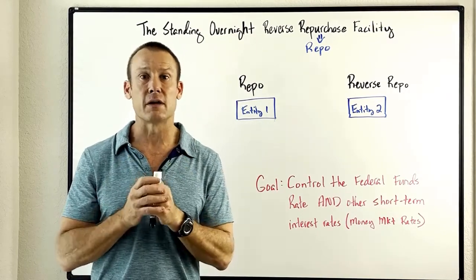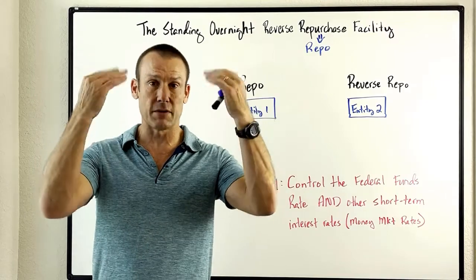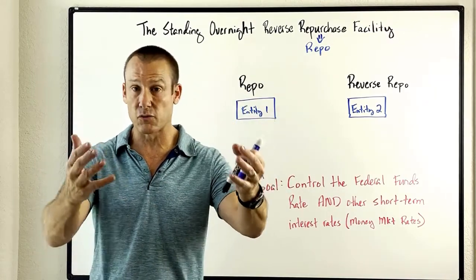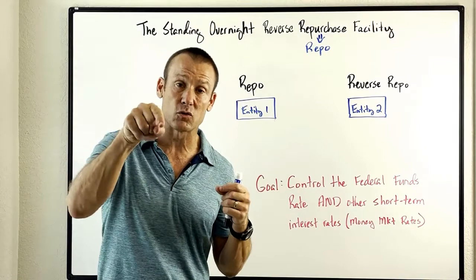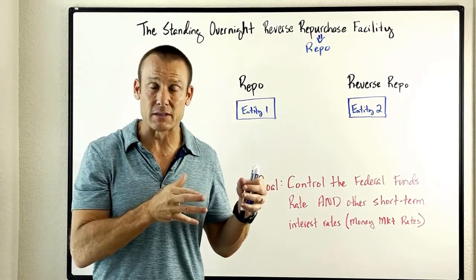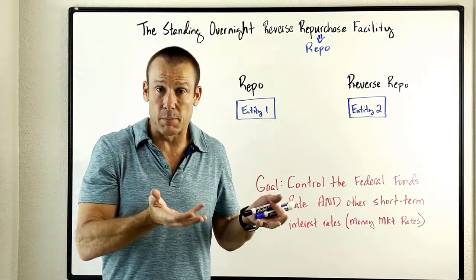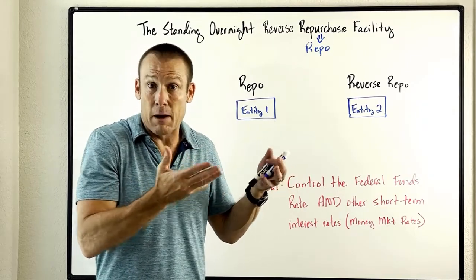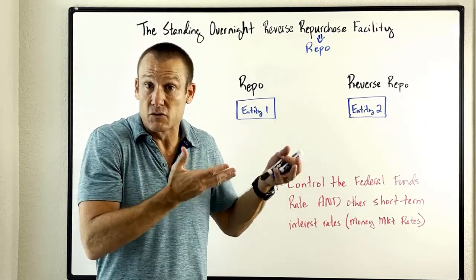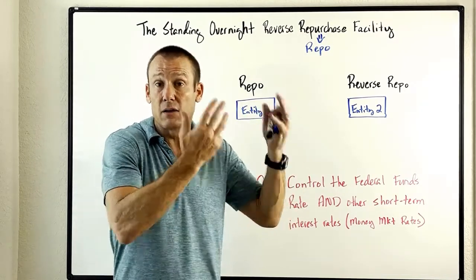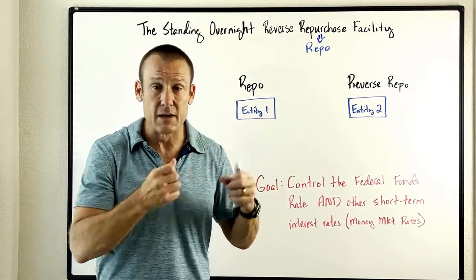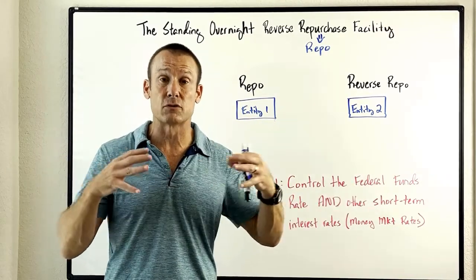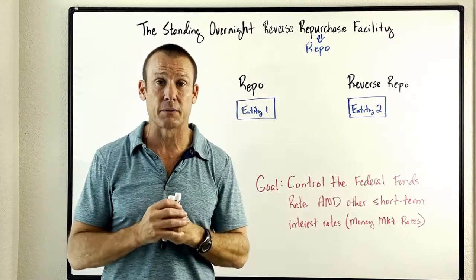But then in 2008, the Fed bought a ton of assets — government bonds and mortgage-backed securities from the banking sector — and credited those banks' reserve balances, basically increasing the amount of reserves banks had and how many reserves they held at the Fed. So reserves exploded.